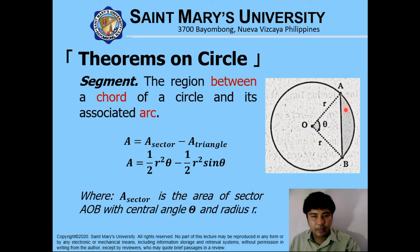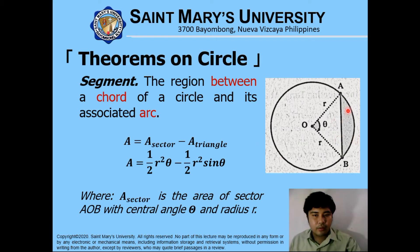A segment is the region between a chord of a circle and its associated arc — the shaded portion. The area of a segment is equivalent to the area of the sector minus the area of the triangle: one half R squared theta minus one half R squared sine theta.